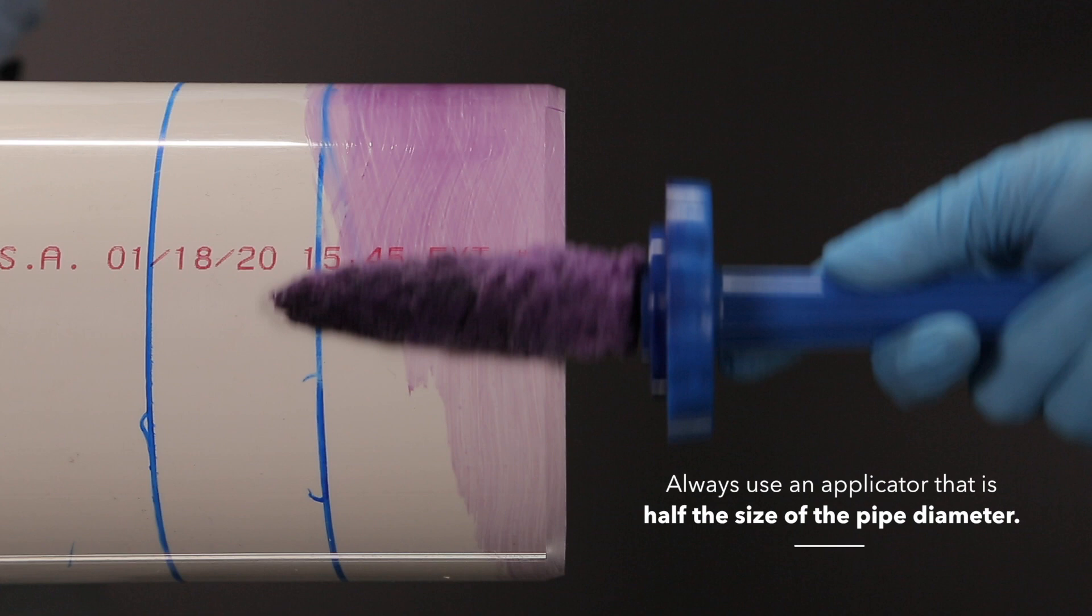No matter what kind of pipe you are joining, you always want to use an applicator that is half the size of the pipe you are joining. So for a 10 inch pipe, you'd use a 5 inch applicator.